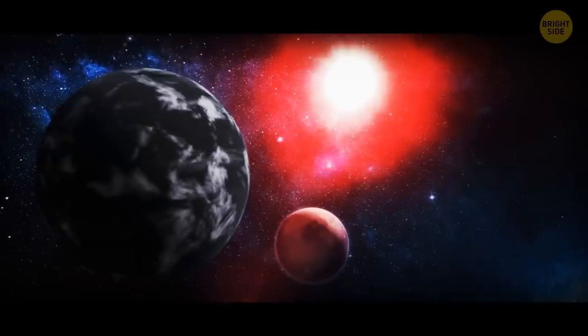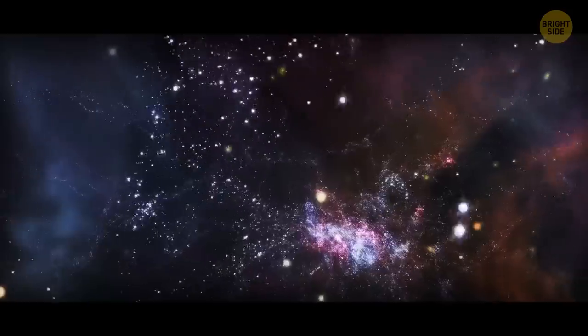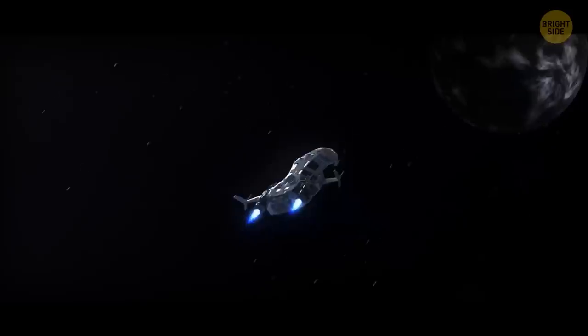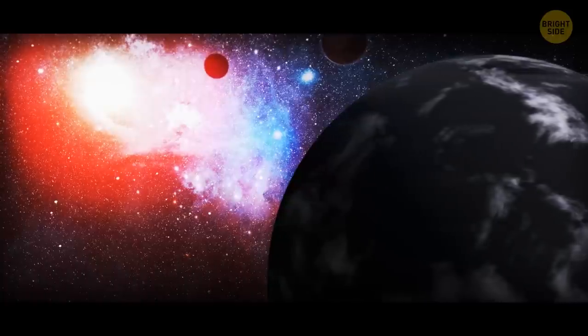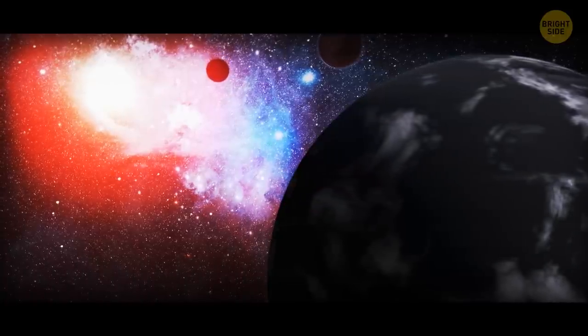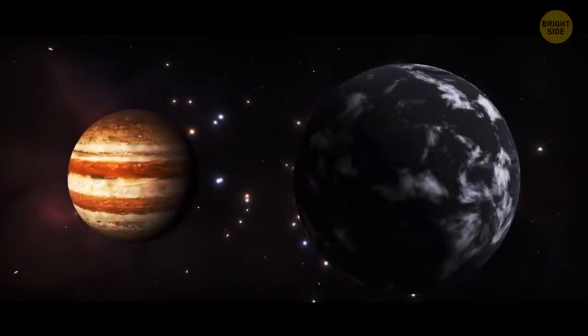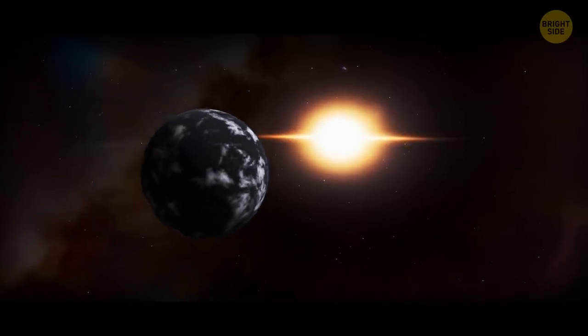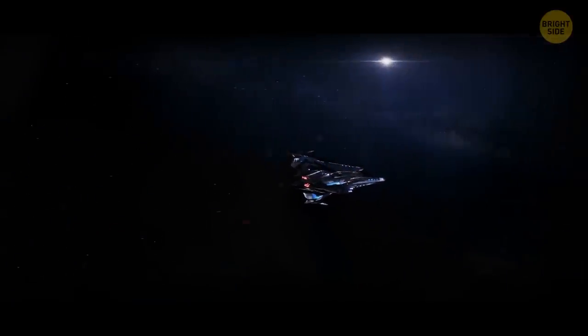Our first destination is a gas giant called Tras-2b. It's located 750 light-years away from us. If we used a regular spaceship, it would take us about 10 million years to get there. Tras-2b orbits a yellow dwarf, a star similar to our Sun. It also weighs about 1.5 times more than Jupiter. So, what's so special about it? Well, if you're afraid of the dark, you definitely don't want to visit this place. It's the planet of Eternal Night, the darkest one of all the planets known to us.